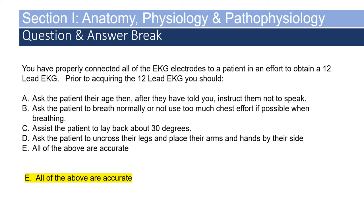Once they've told you their age, instruct them it's best if they don't speak. Breathing normally and not using too much chest effort reduces artifacts. Assisting the patient to lay back about 30 degrees puts the body in a relaxed position — a patient sitting upright is still utilizing accessory muscles, which will alter the printout and create artifact. This is also true for asking the patient to uncross their legs and place their hands and arms by their side.